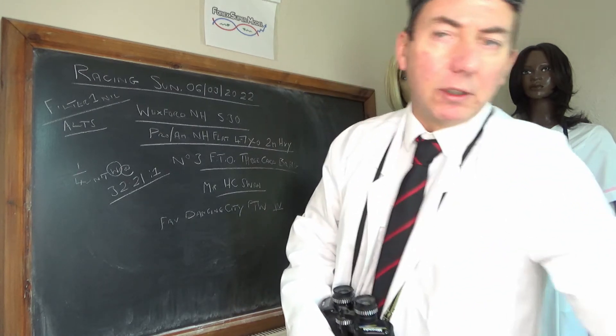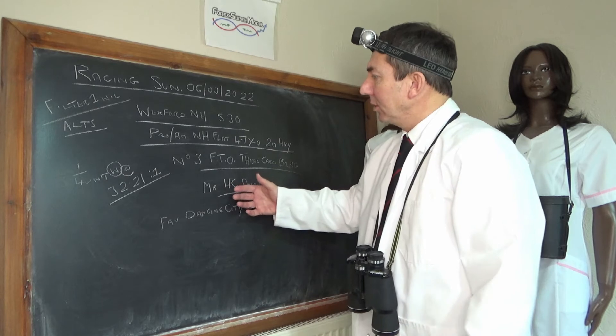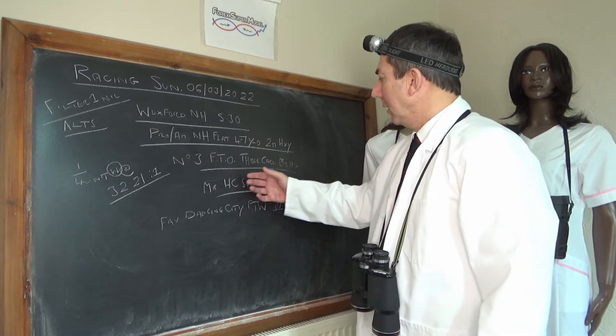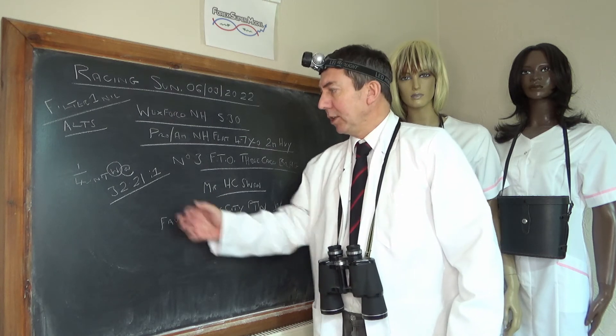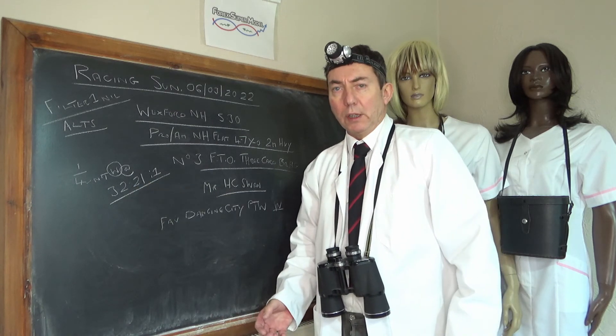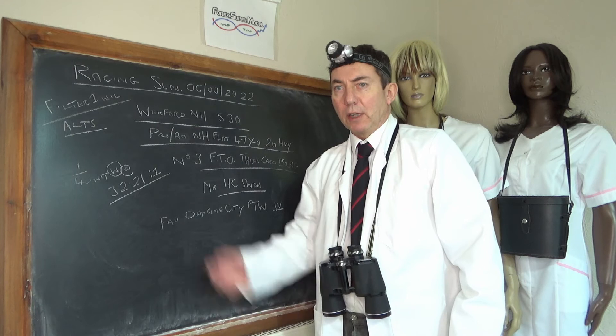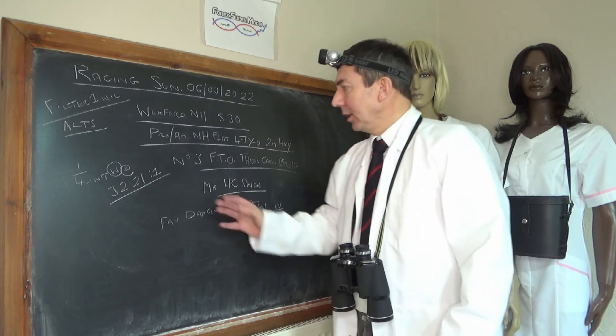We don't think much to that one either. So whilst we don't have the full information on this horse, 3 Card Brag, we can infer that it's got a much better chance than 32 to 1 to win, and the going's heavy, which is ideal for an upset. So there you go.